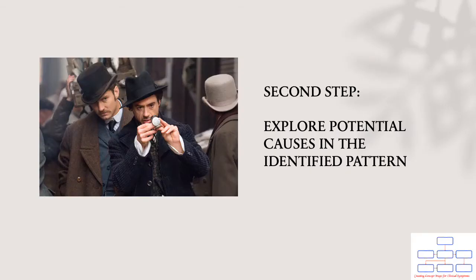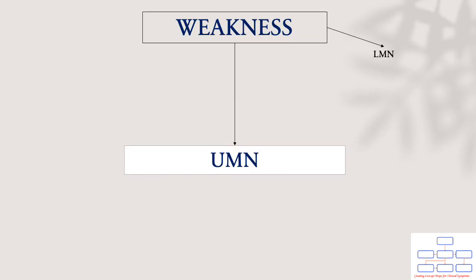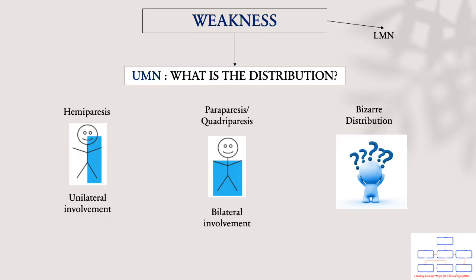Once you've identified the pattern of weakness — whether predominantly upper motor neuron or lower motor neuron — it is time to investigate what and where the potential lesions could be in each of those categories. When approaching upper motor neuron weakness, you firstly need to establish the distribution of the weakness.